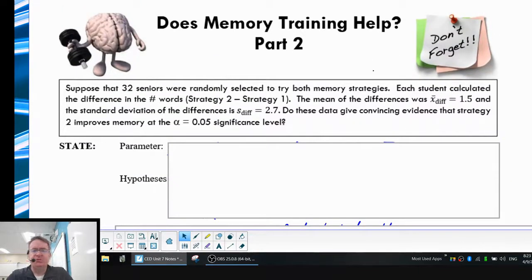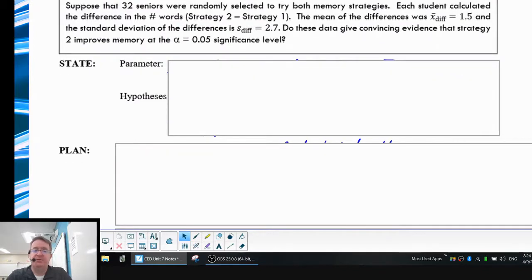32 seniors randomly selected. Try both memory strategies. One of them was just memorize them straight through. The second one was make a story. You're going to do the difference of the two words between them. The mean difference was a gain of 1.5 words, and the standard deviation is 2.7. Do these data give convincing evidence that strategy 2 improves memory at an alpha value of 5% significance.